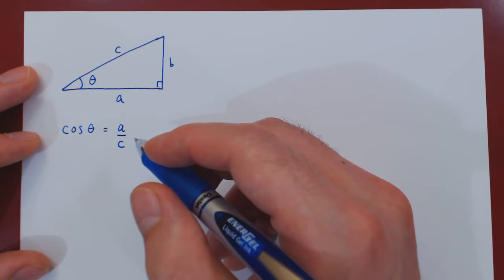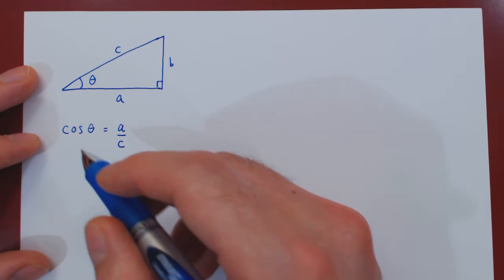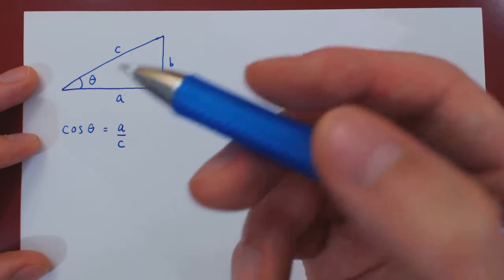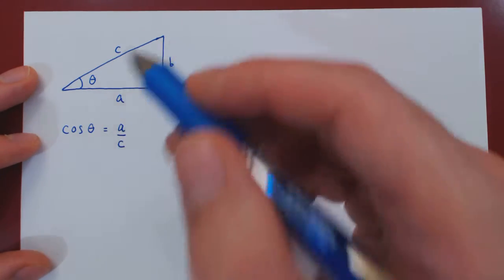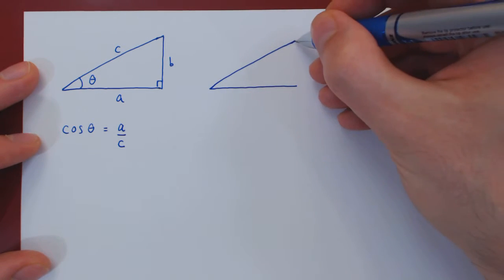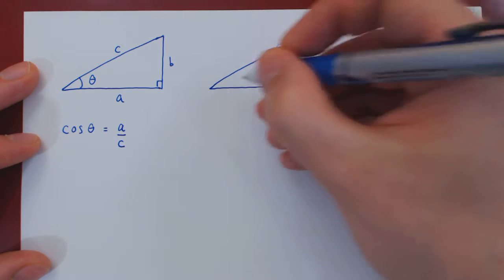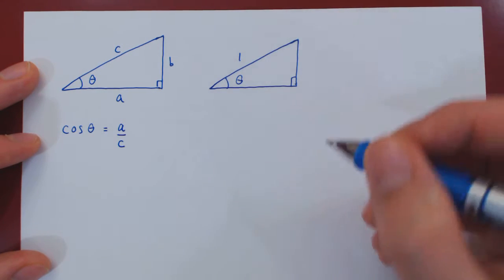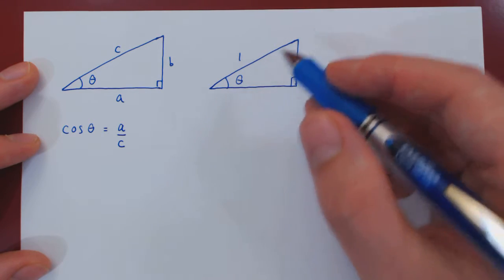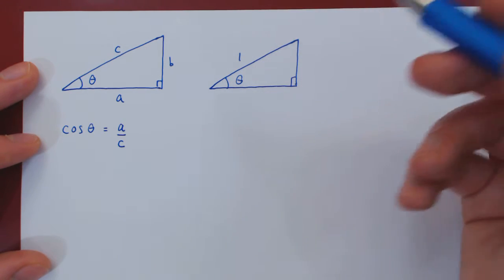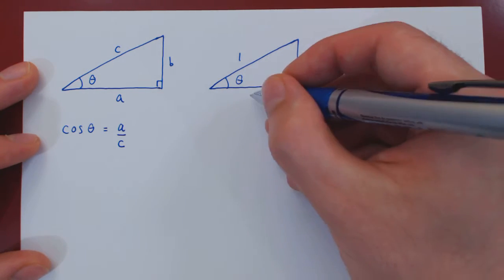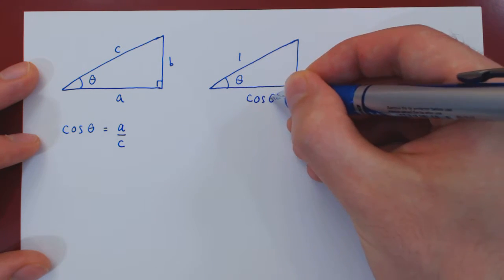We can use the same argument as in the case of sine of theta to show that cosine of theta is always the same for any similar triangle. So we can pick the simplest right triangle where the hypotenuse is equal to 1. If the hypotenuse is 1 and cosine is the ratio of the adjacent side over the hypotenuse, dividing by 1 changes nothing. So the base of the triangle is simply the cosine of theta.